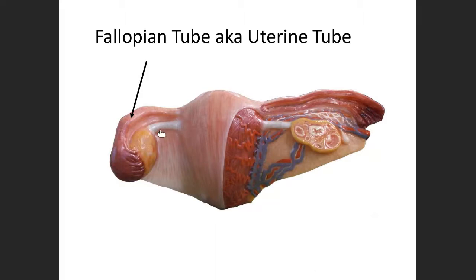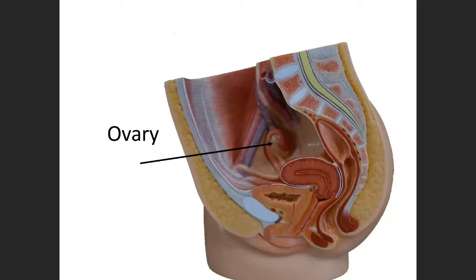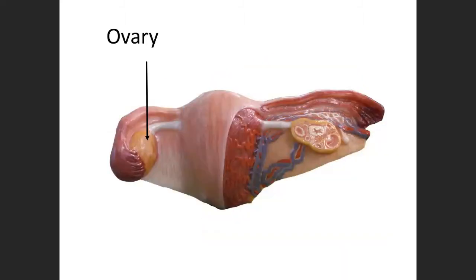Not to be confused with this right here — this is the ligament, not a tube. Fallopian tube and uterine tube. At one end of the fallopian tube, in close proximity, is the ovary. You don't have to be specific about right or left ovary — just write ovary.